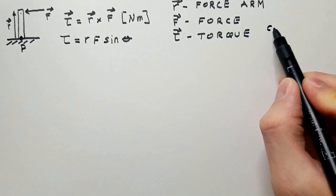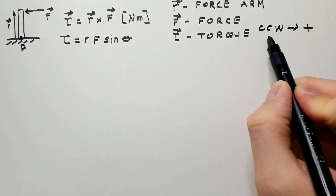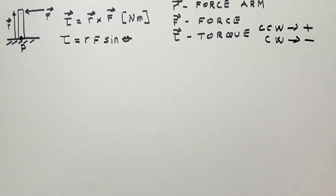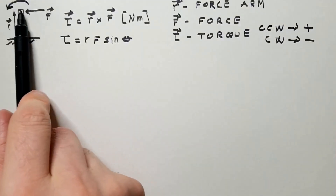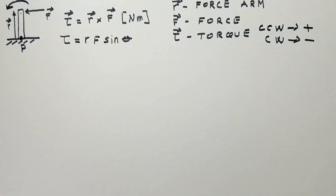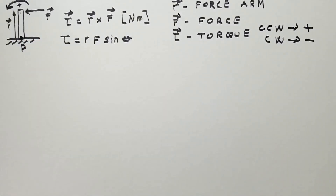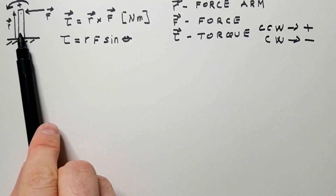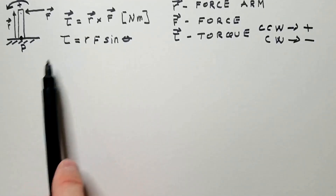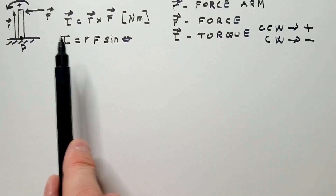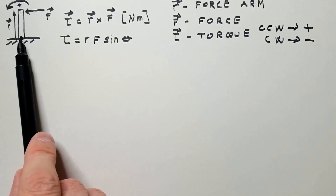By convention, counterclockwise torque is positive and clockwise torque is negative. In this case, you can see that this force would exert a positive torque with respect to this pivot point. Therefore, we can conclude that a force applied on an object at a point away from the pivot point will cause torque. The greater the force, the greater the torque. The greater the force arm — the distance between the point where the force is applied and the pivot point — the greater the torque.